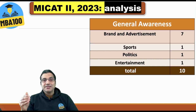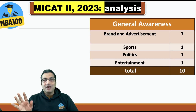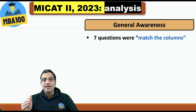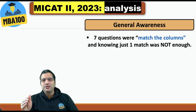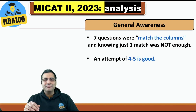In general awareness, out of 10 questions, as many as 7 were on brand and advertisement — and rightly so, since the course is PGDMC and we know what MICA is all about. From sports: 1, from politics: 1, from entertainment: 1. Those appearing for this test in future should be well aware that you need to read a lot on brand and advertisement. Seven questions were in the form of match-the-columns, and knowing just one match was not enough in most cases. An attempt of 4 to 5 is good.